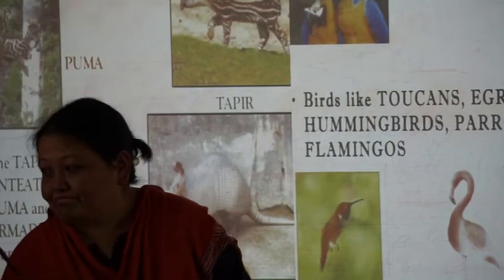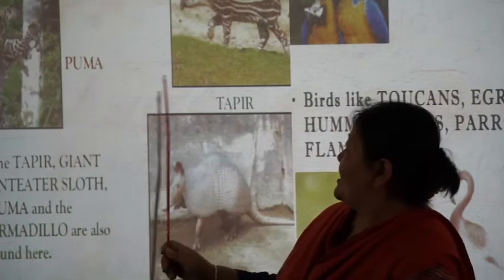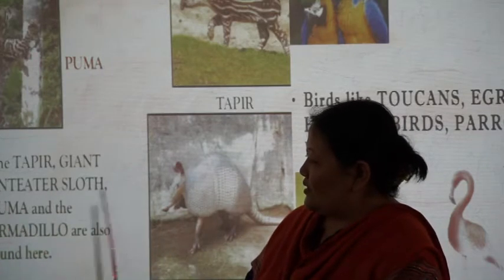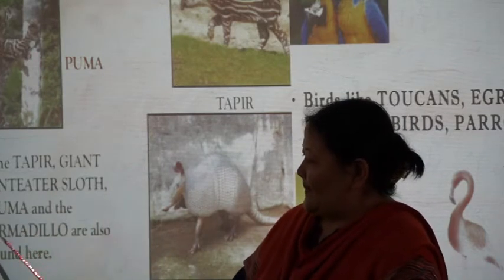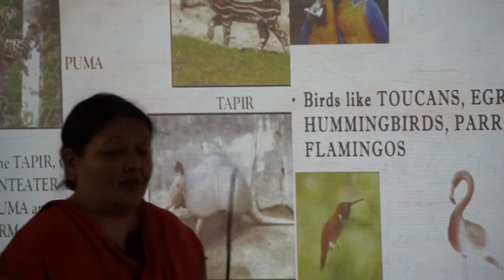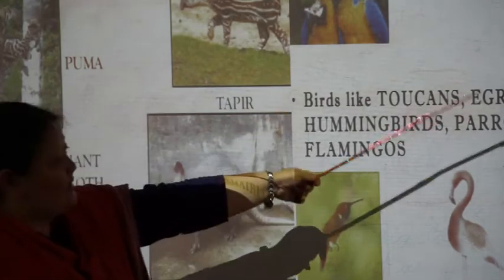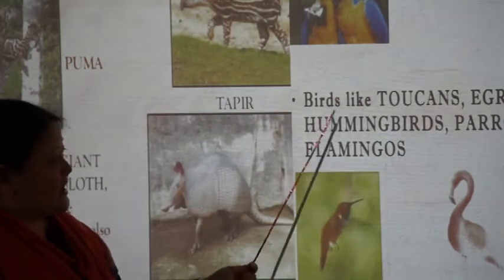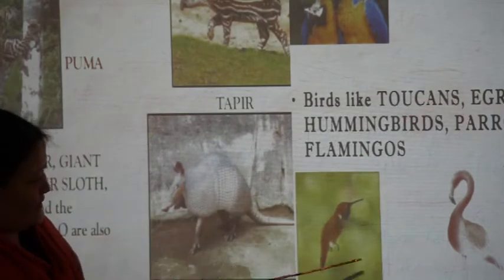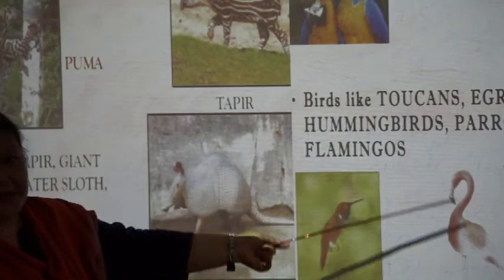In other parts of South America you can find the puma and the armadillo, which are also found in the Amazon region. In the tropical region you have birds like toucans, egrets, parrots and flamingos — these are the types of birds found in the tropical region.